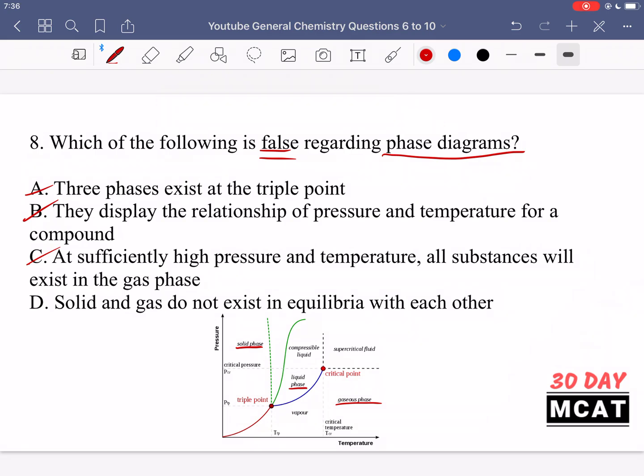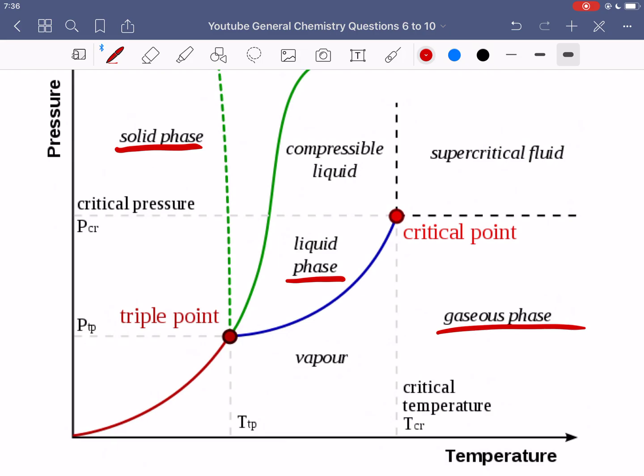So option C, at sufficiently high pressure and temperature, all substances will exist in the gas phase. Yes, this is also something which is correct. If you get any substance, even those which you are never really accustomed to thinking about as gases, if you put them at a high enough pressure and temperature, yes, they do have some part of their phase diagram which is the region at which they exist as a gas. So that does exist for all substances.